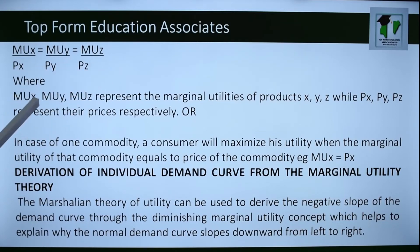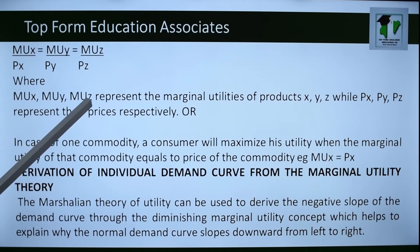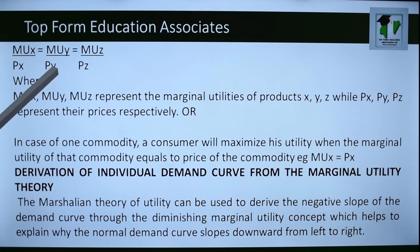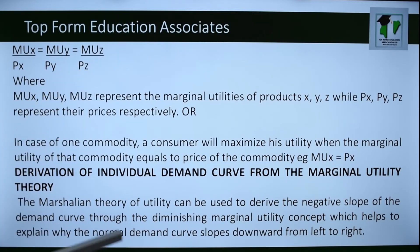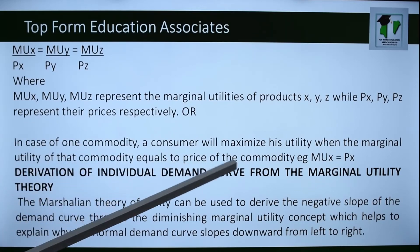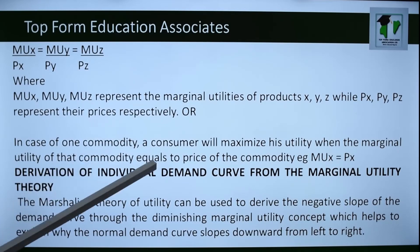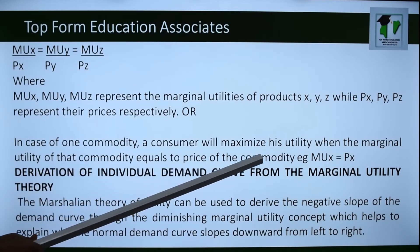Mathematically, utility is maximized where: MUx/Px = MUy/Py = MUz/Pz, where MUx, MUy, and MUz are the marginal utilities of commodities X, Y, and Z respectively, and Px, Py, Pz are their prices. For one commodity, a consumer maximizes utility when the marginal utility of that commodity equals its price.